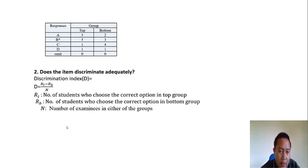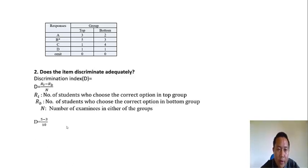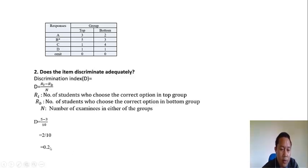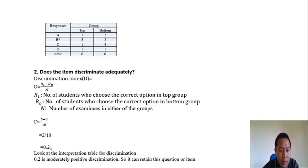When calculating the difficulty index, the total number of students in the sample is 20, but for the discrimination index, N is 10 — be careful about this distinction. So D equals: 5 (correct in top group) minus 3 (correct in bottom group), which is 2, divided by 10, giving D = 0.2.